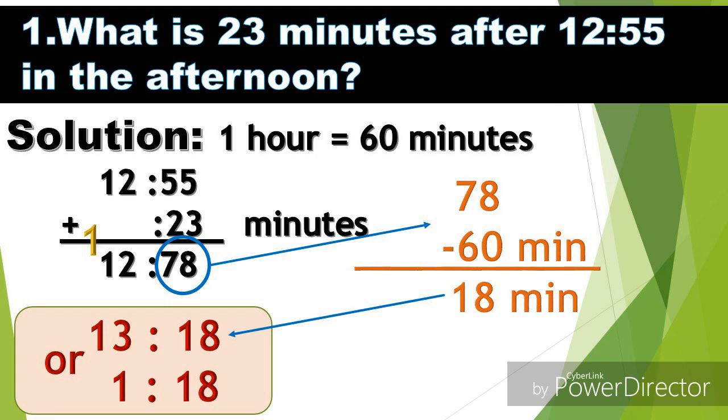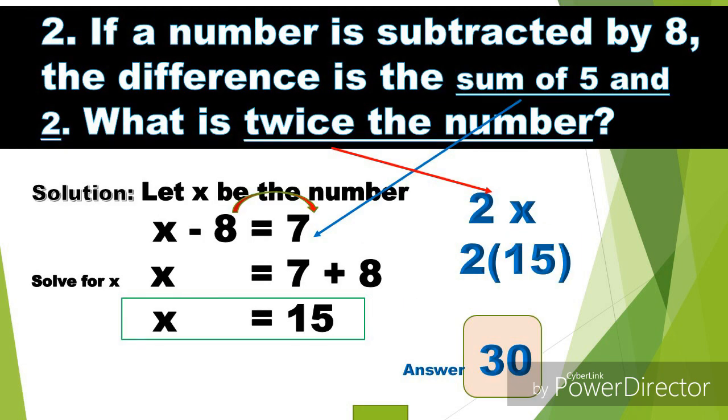Problem number two: if a number is subtracted by 8, the difference is the sum of 5 and 2. What is twice the number? The solution: let x be the number. If x is the number, we're going to find the difference or it is subtracted by 8, so magiging x minus 8. And then bakit 7? It is because the sum of 5 and 2, so 5 plus 2 is 7.